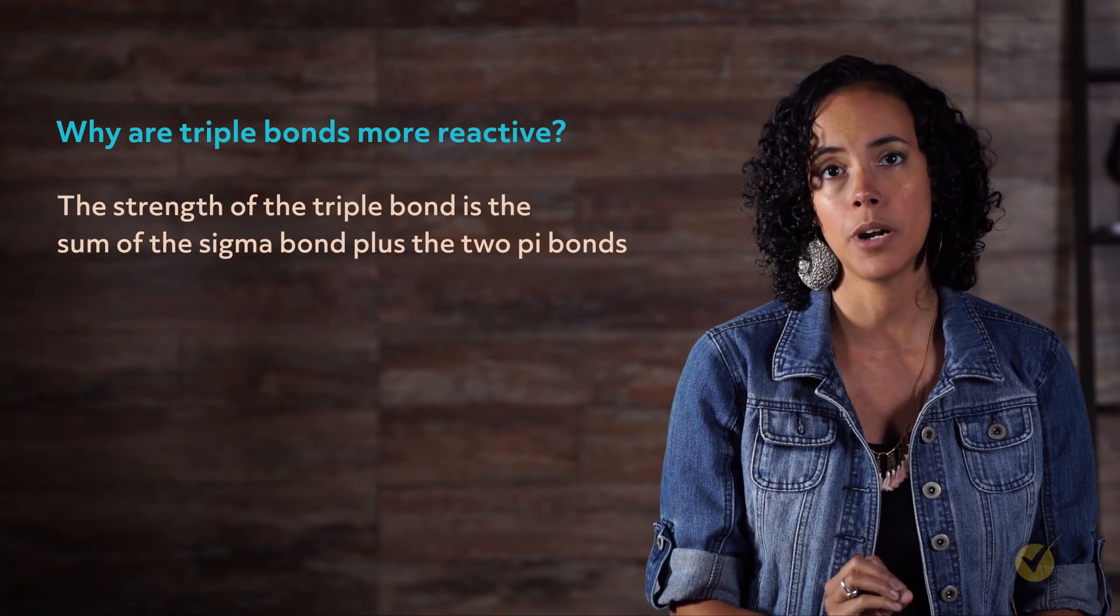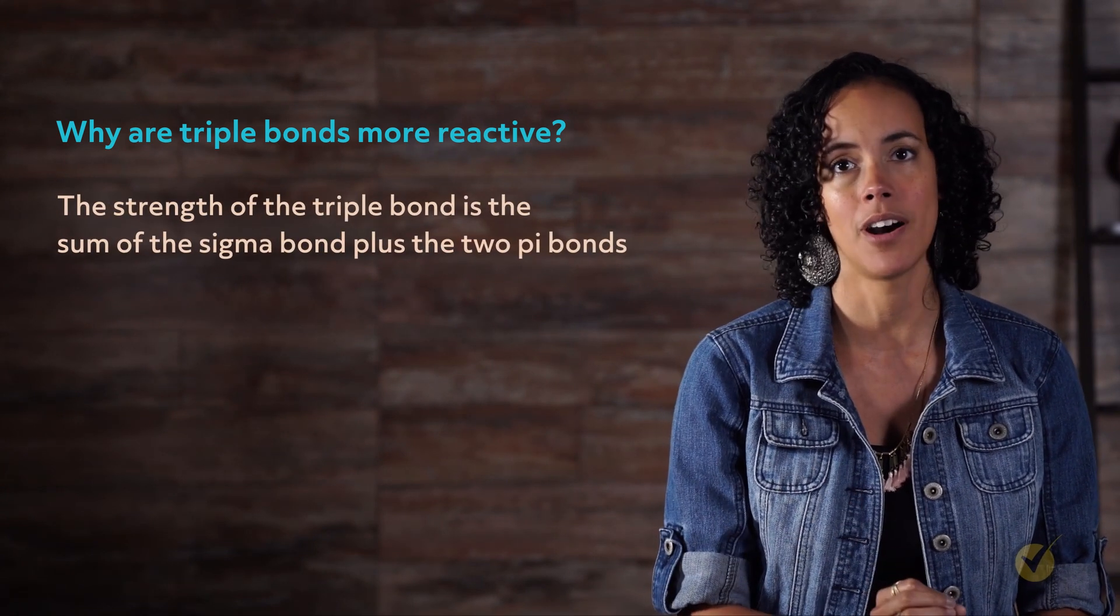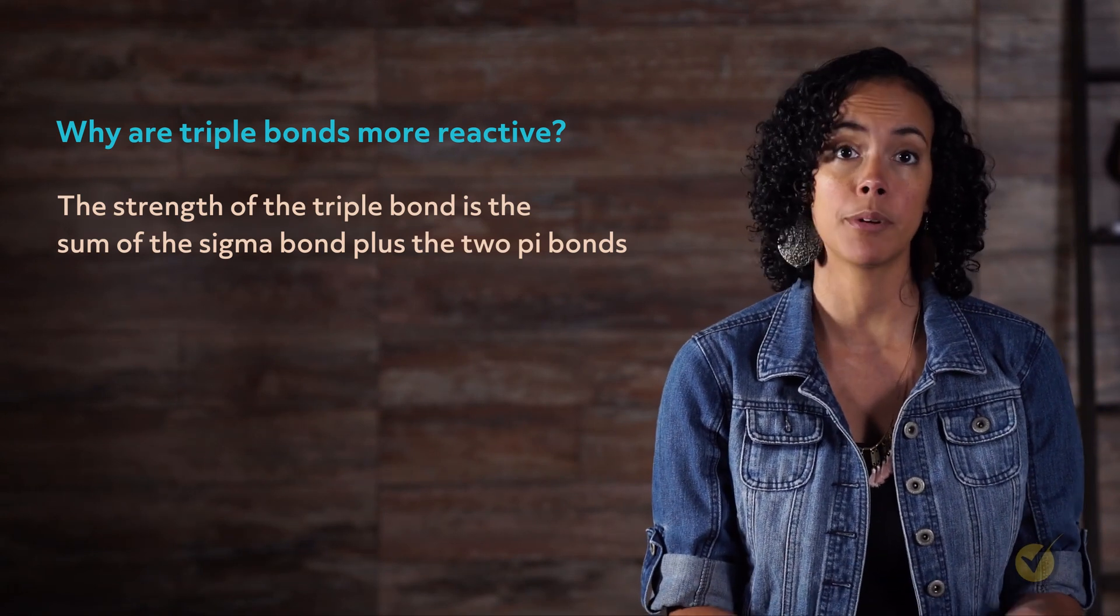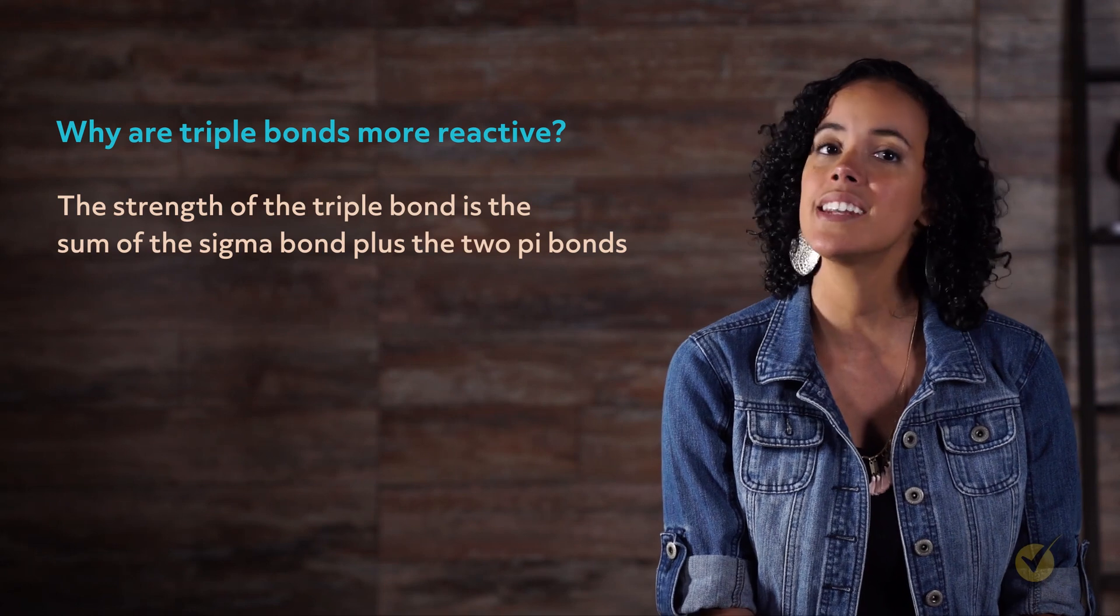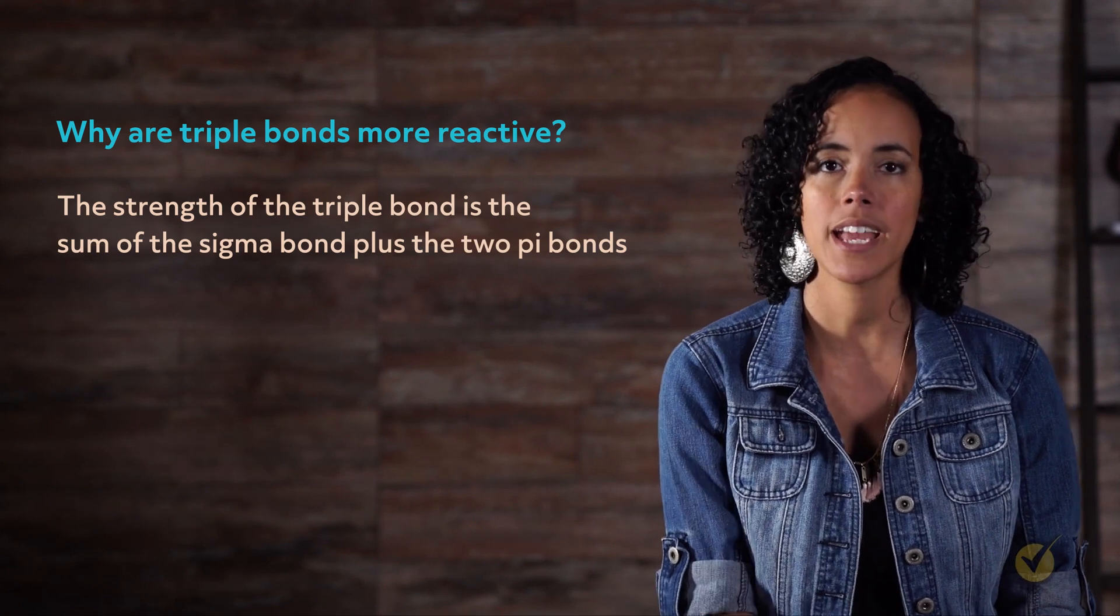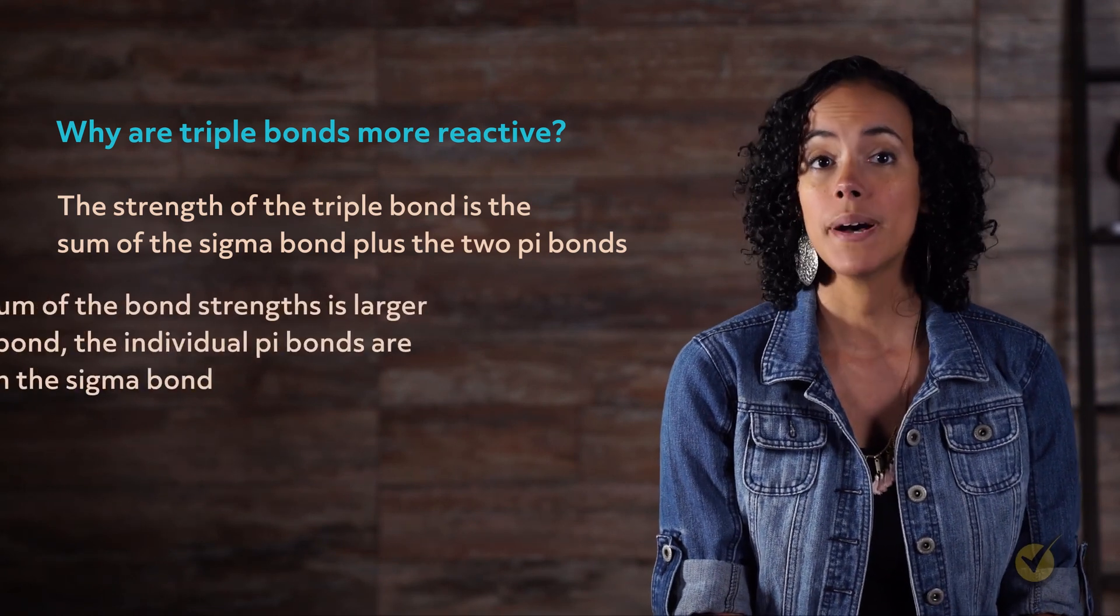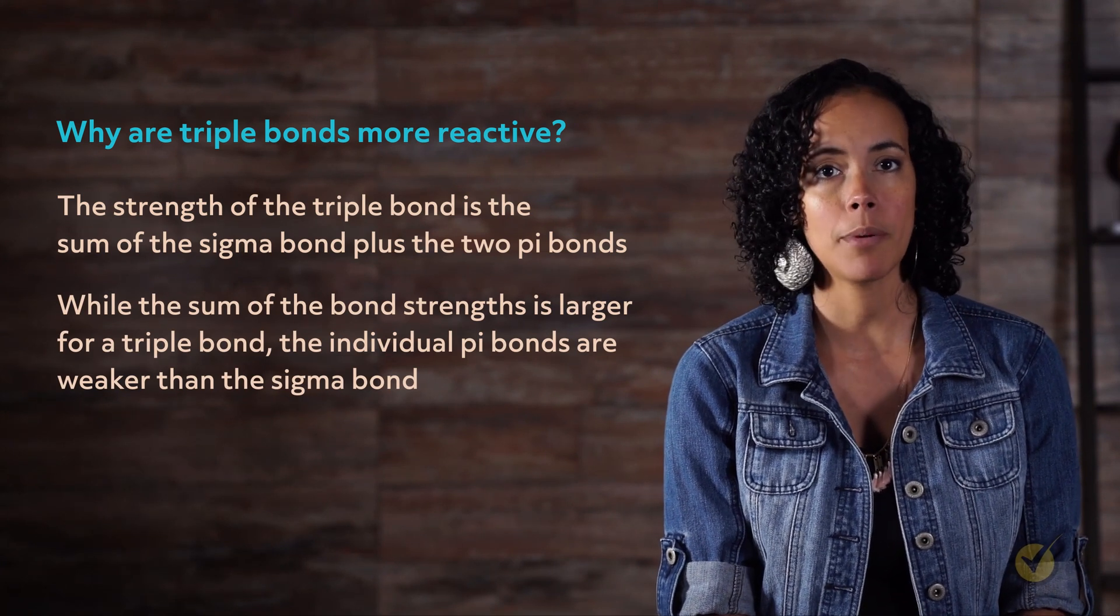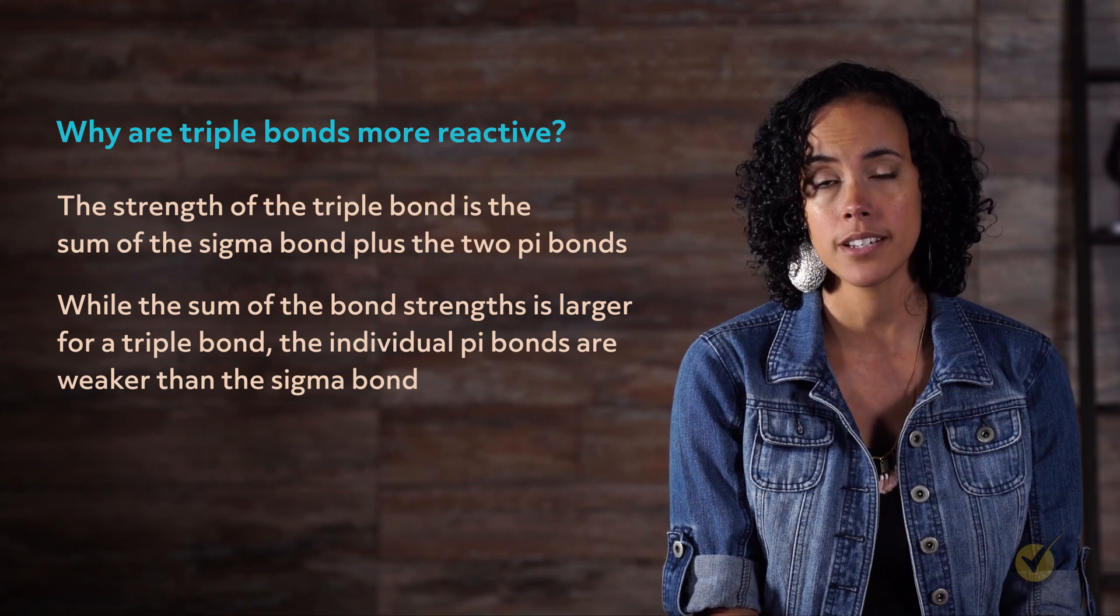The strength of the triple bond is the sum of the sigma bond plus the two pi bonds. This is, of course, a larger number than the sum of a sigma bond and a single pi bond, the double bond, and a single sigma bond. But while the sum of the bond strengths is larger for a triple bond, the individual pi bonds are weaker than the sigma bond.